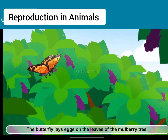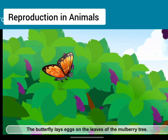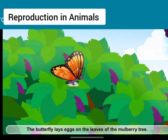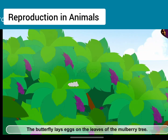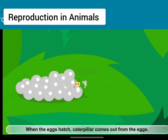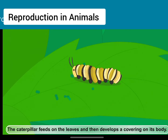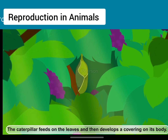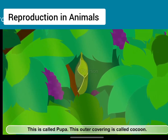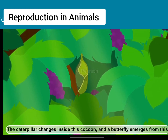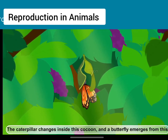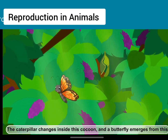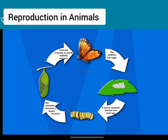The butterfly lays eggs on the leaves of the mulberry tree. When the eggs hatch, a caterpillar comes out from the eggs. The caterpillar feeds on the leaves and then develops a covering on its body. This is called pupa. This outer covering is called cocoon. The caterpillar changes inside this cocoon and a butterfly emerges from this. This is called the life cycle of the butterfly.